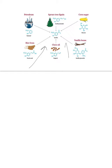You can synthesize vanillin starting from rice bran, clove oil, corn sugar, or petroleum — the latter being a major source. In addition to providing an inexpensive source of vanilla at higher purity than natural vanilla extract, this synthesis enables production of vanilla derivatives with desirable qualities like increased flavor potency and thermal stability. Artificial vanilla is produced because natural vanilla is very expensive and cannot meet all the global demand for the flavor.